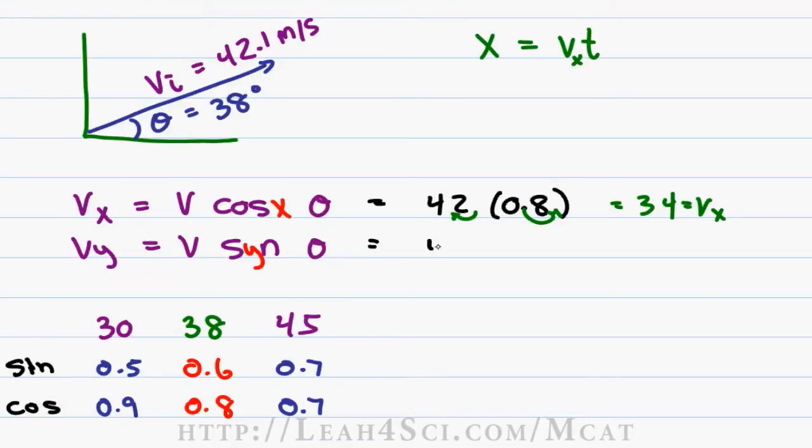For Vy, we have 42 times 0.6. We'll do the trick again, decimal to the right, decimal to the left, 6 times 4 is 24. For 6 times 0.2, we have 6 times 2 which is 12 so 6 times 0.2 is 1.2, let's raise this by 1 giving us 25 as our Vy initial, that's Vx initial.